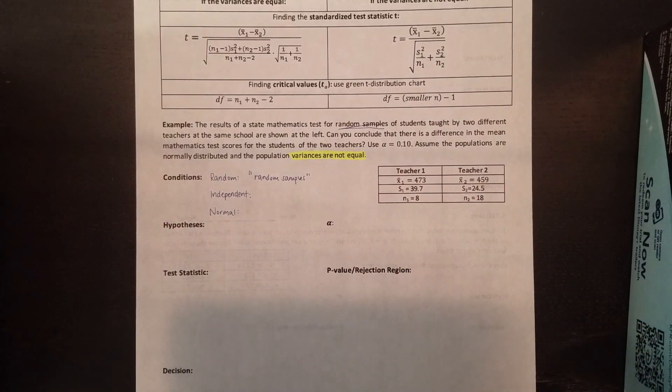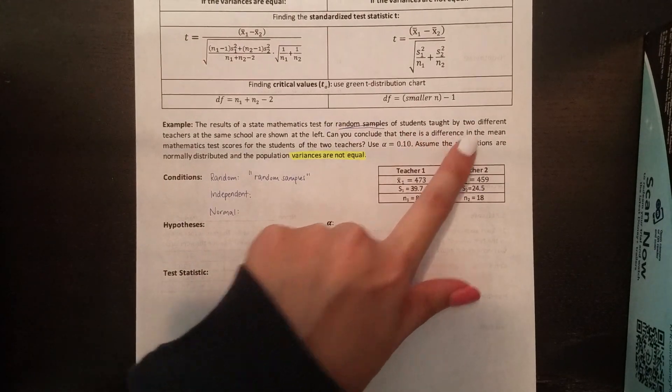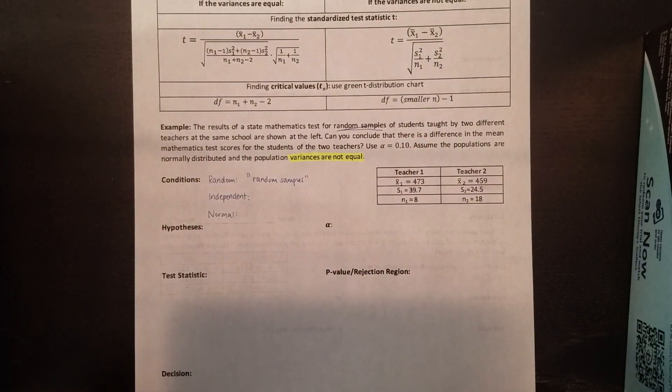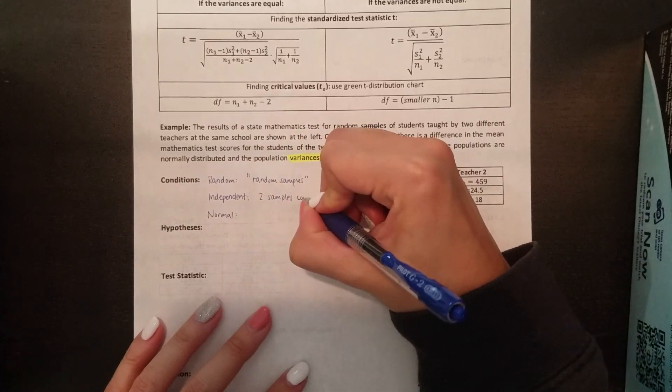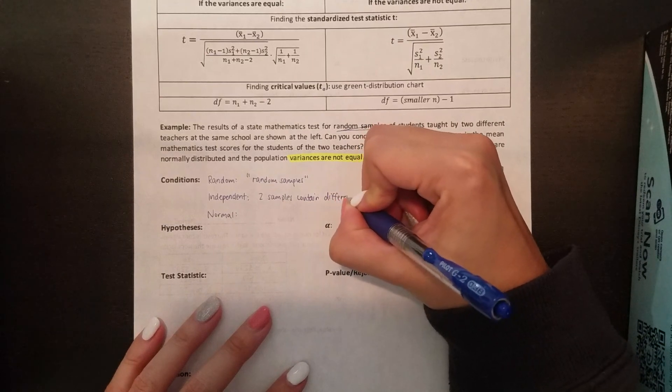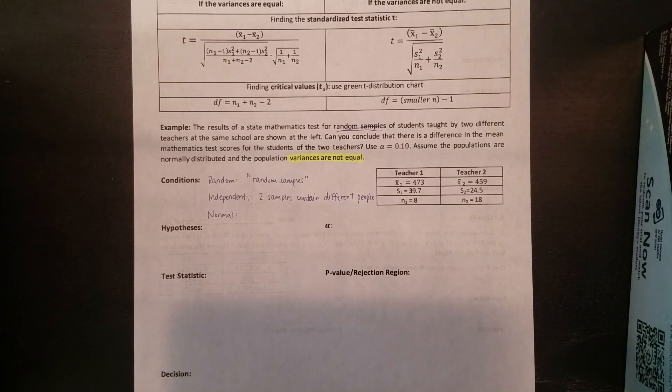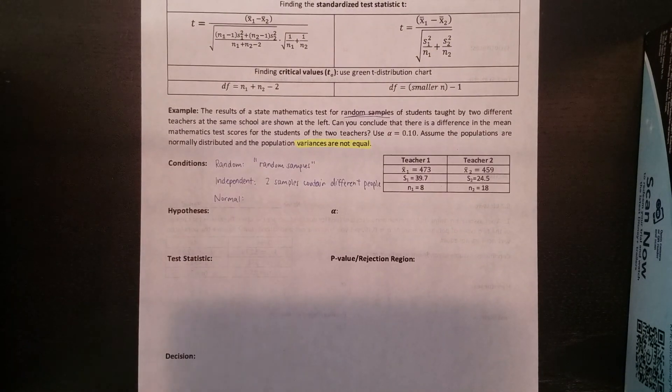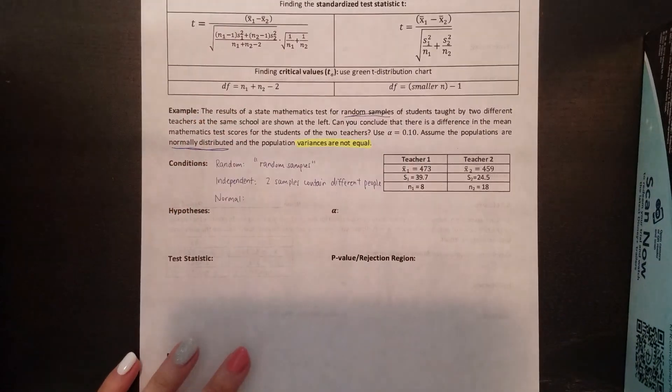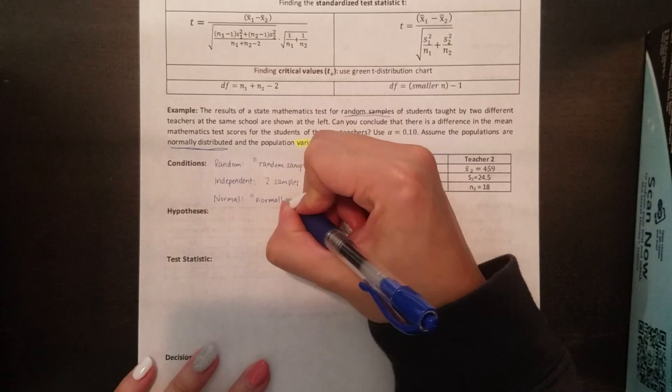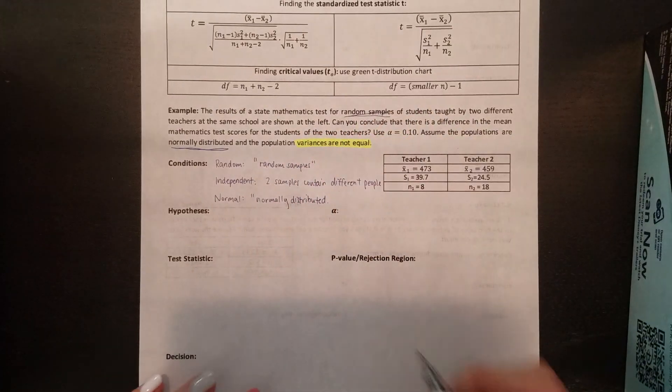For independence, remember, we have independent and dependent samples, we just need to see if the two samples that we have are related to each other. So we're talking about two samples. These are students taught by two different teachers at the same school. If they're students taught by two different teachers in a math class, you're not going to have the same people in each of the samples. So I'm going to say, the two samples contain different people. So that's how we have independent samples. And then lastly, for normal, we're either looking for it to say normally distributed, or the sample size, N₁, N₂ has to be greater than 30. If we look at our N₁ and N₂, they're both less than 30. So that doesn't work. But it did say normally distributed. So that helps.